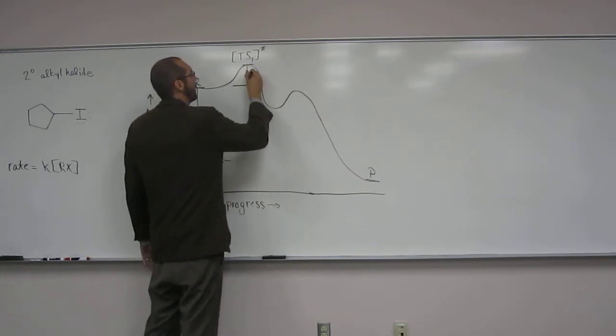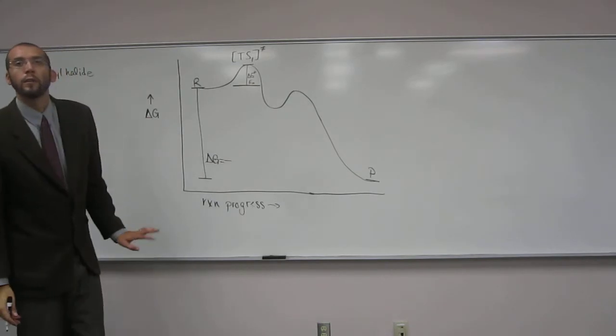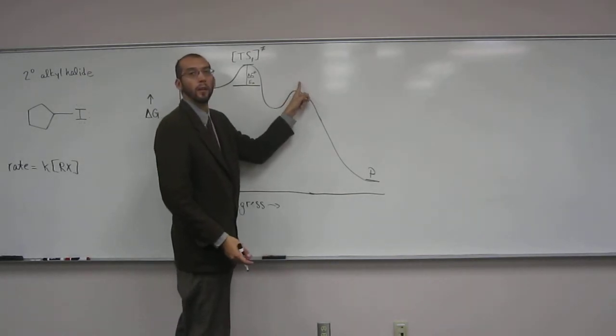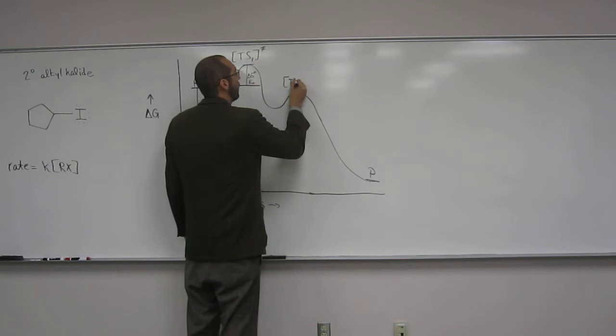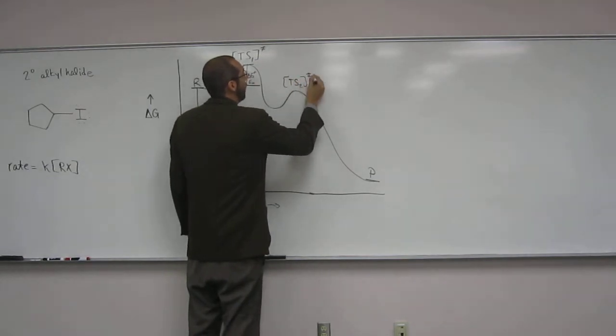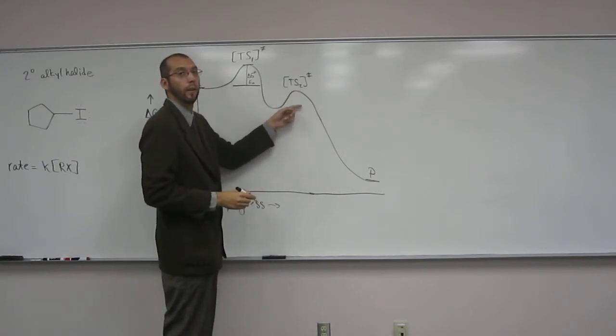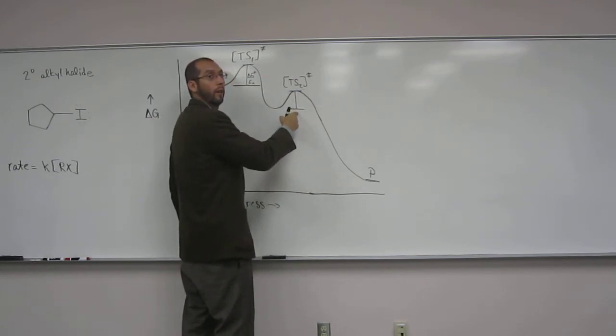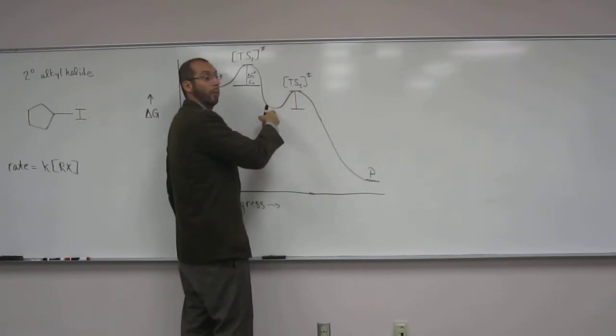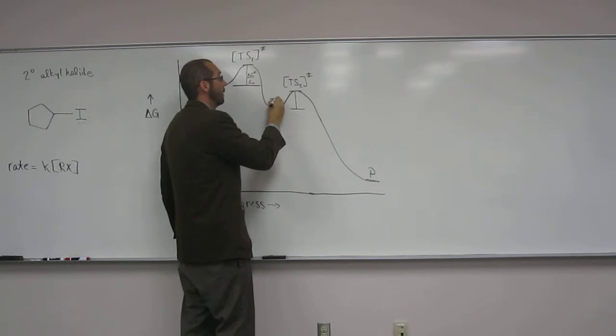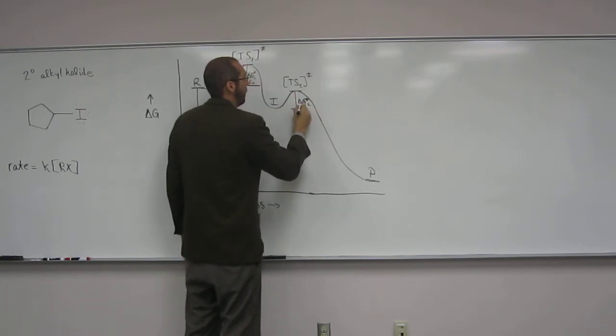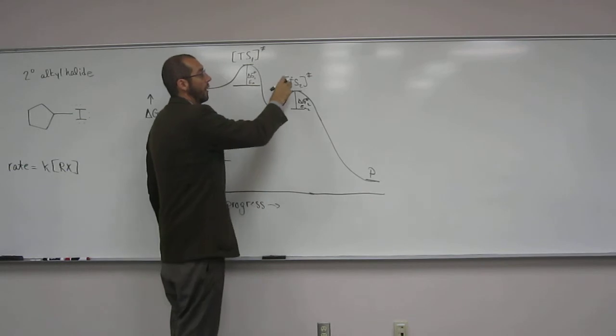So, often times this will be like delta G double dagger. Or EA. Whichever one you prefer is fine. What about here? What's this going to be called? Transition state two. Transition state two. And, what about the energy from here to here? Delta G double dagger. That's the what? Activation. Activation energy going from this thing, which is the what? Intermediate. Intermediate. From the intermediate to that transition state.